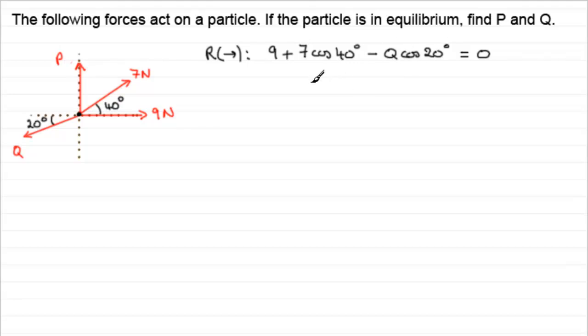So all we need to do is rearrange this now to make Q the subject. So if you add Q cos 20 to both sides and then divide by cos 20, you'll end up with Q equaling 9 plus 7 cos 40 degrees, and that's all divided by cos of 20 degrees. And if you work that out in your calculator, you should find you get 15.284 and so on. And if we give this to a suitable degree of accuracy, let's say one decimal place, then that would be 15.3 newtons to 1 dp. So that gives us Q.